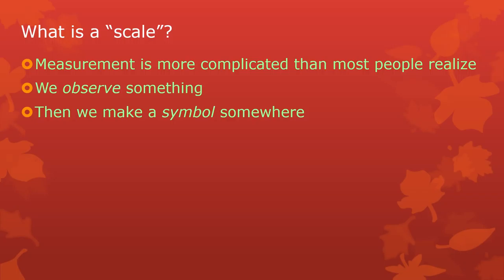We observe something in the world and then we make a symbol about it. It might seem kind of obvious, but that gap between the observation and the symbol is pretty critical. We need to understand what the thing is that got observed, and we need to understand what the rules were for making the symbol from the thing that was observed.